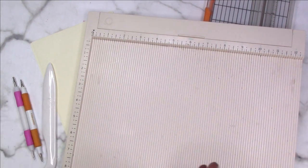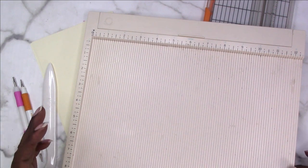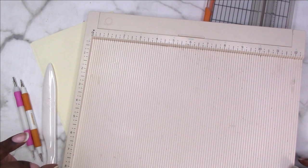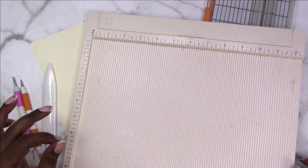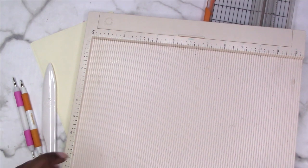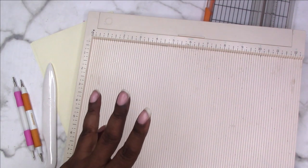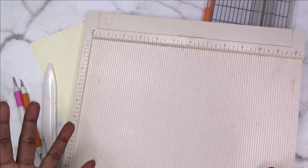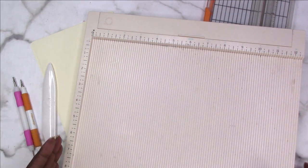If you fold by hand, especially with heavier weight paper or cardstock, sometimes you'll get cracking and tearing, or a jagged fold. Scoring helps train the fibers of the paper and prepares them for folding so you don't get that cracking.